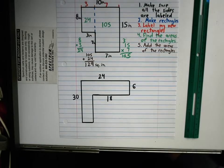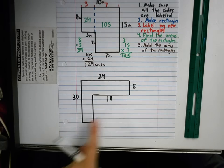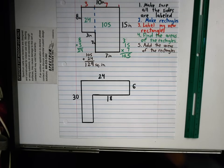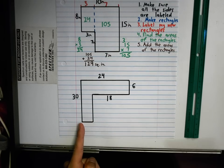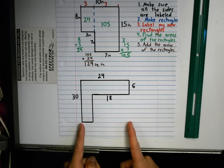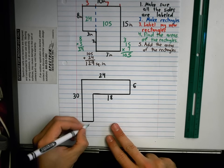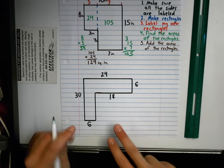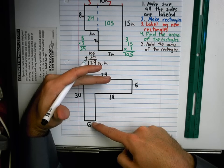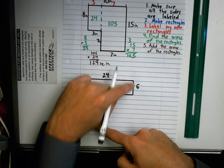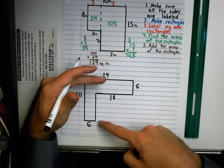18. No. Cause 18 and 18 doesn't equal 24. Remember going from here all the way to here is going to be 24. 6. 6. Perfect. And what about this one? I know going from here to here is 30 and I know this one right here is 6. So what's this one right here going to be?